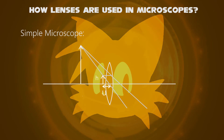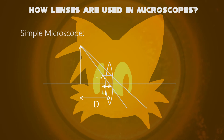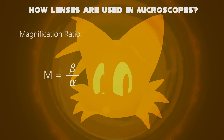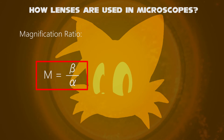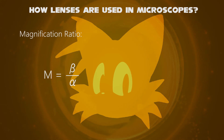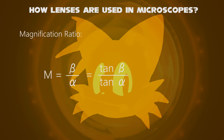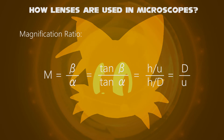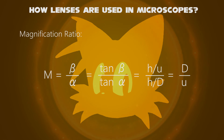The distance between the lens and the object is U, and the height of the object is H. The distance between the lens and the image is D, whether it is small or large. The magnification ratio of a simple lens is beta divided by alpha, which is also equal to tangent beta divided by tangent alpha. Since tan beta equals H divided by U, and tan alpha is H divided by D, this simplifies to D divided by U, independent of object height.